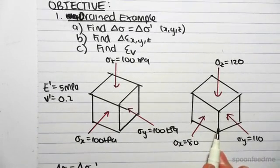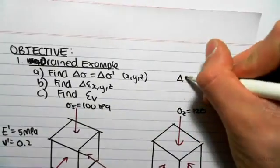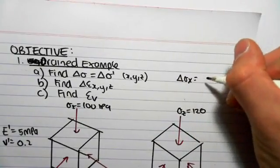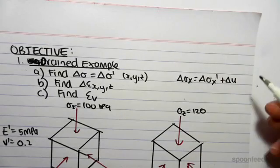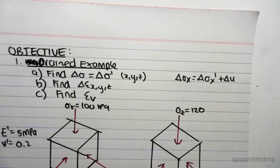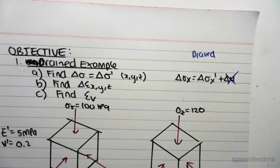Which means that there's no excess pore water pressure. So we spoke about this in the previous video, that the total stress is equal to the change in effective stress plus the change in pore water pressure. But because it's drained, because we're looking at a drained case, that does not exist, and therefore we just have that relationship there.